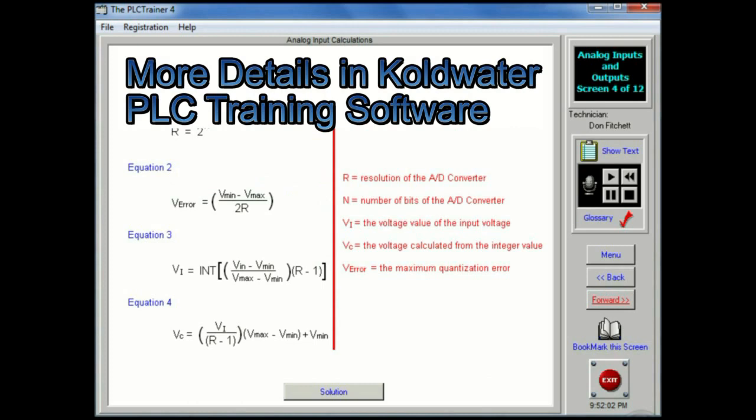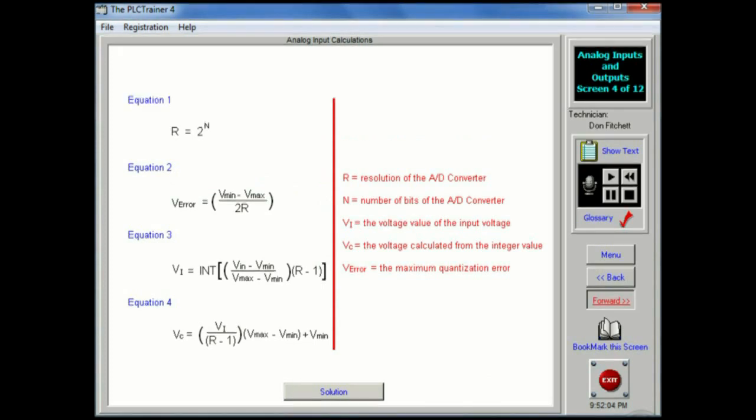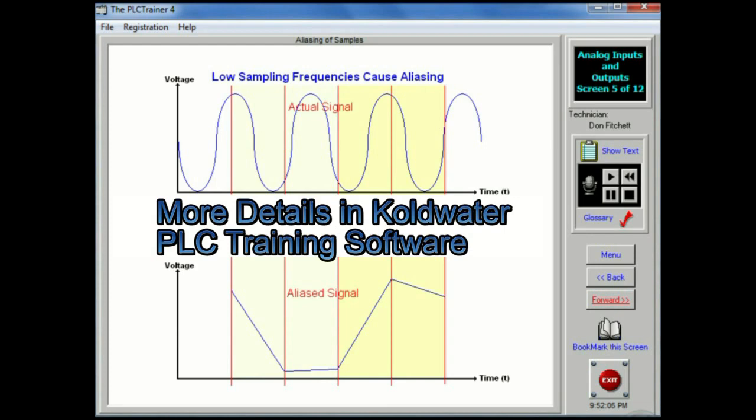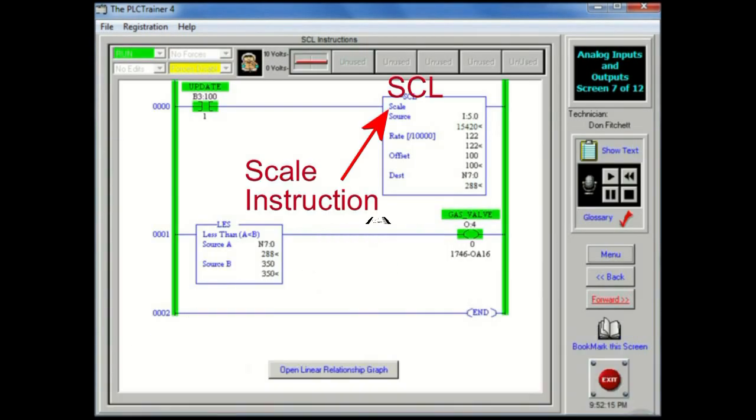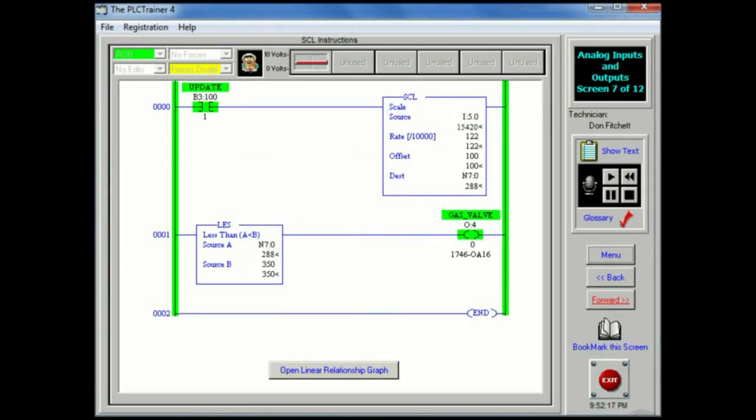A more realistic drawing of sample data is shown here. The parameters defined on the previous screen can be used to calculate values for the AD converters. If the voltage being sampled changes too fast, false readings may occur. This device is an 8-bit AD converter.